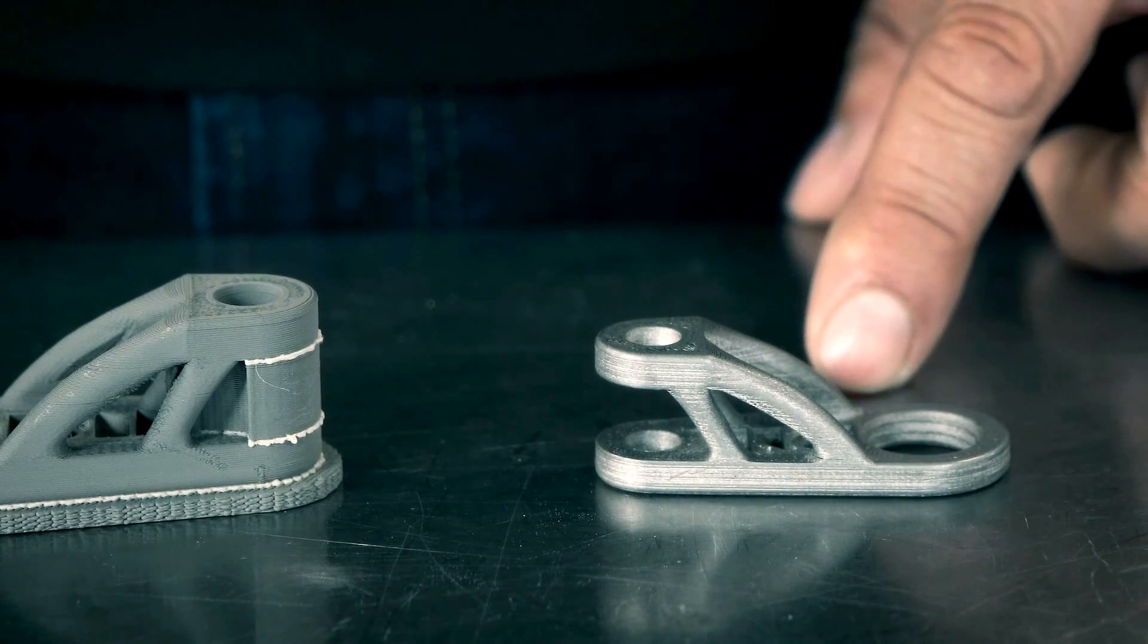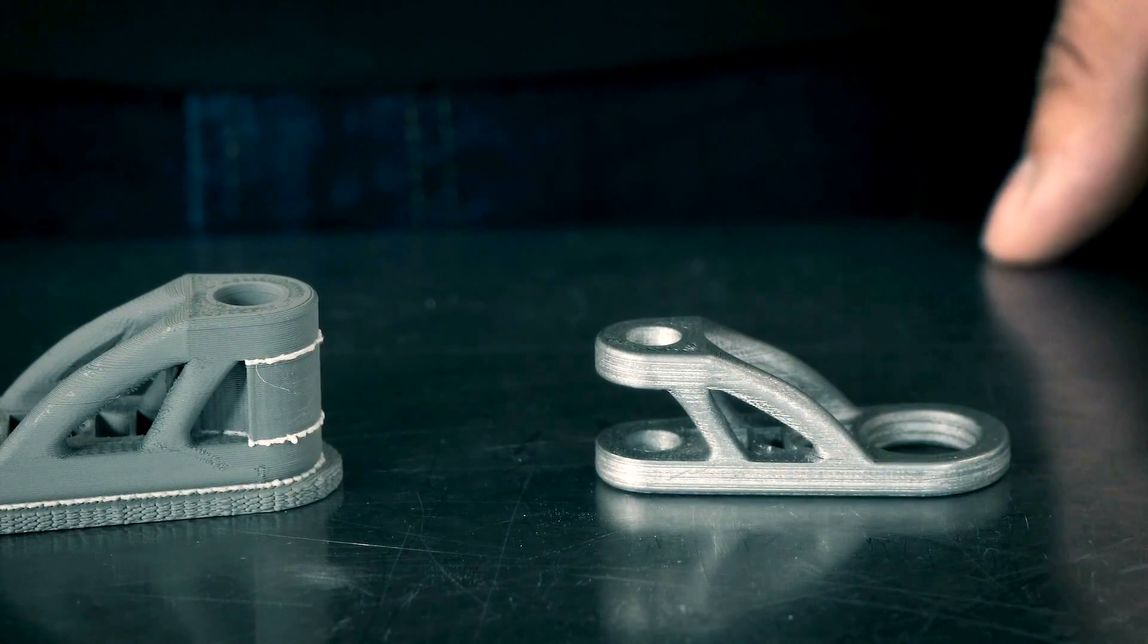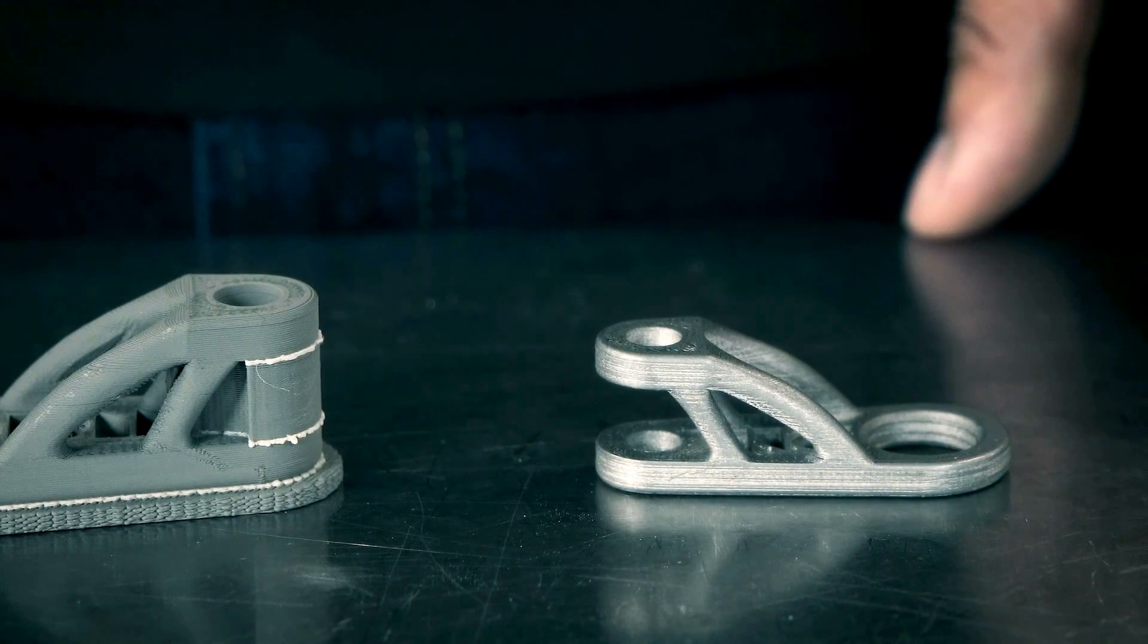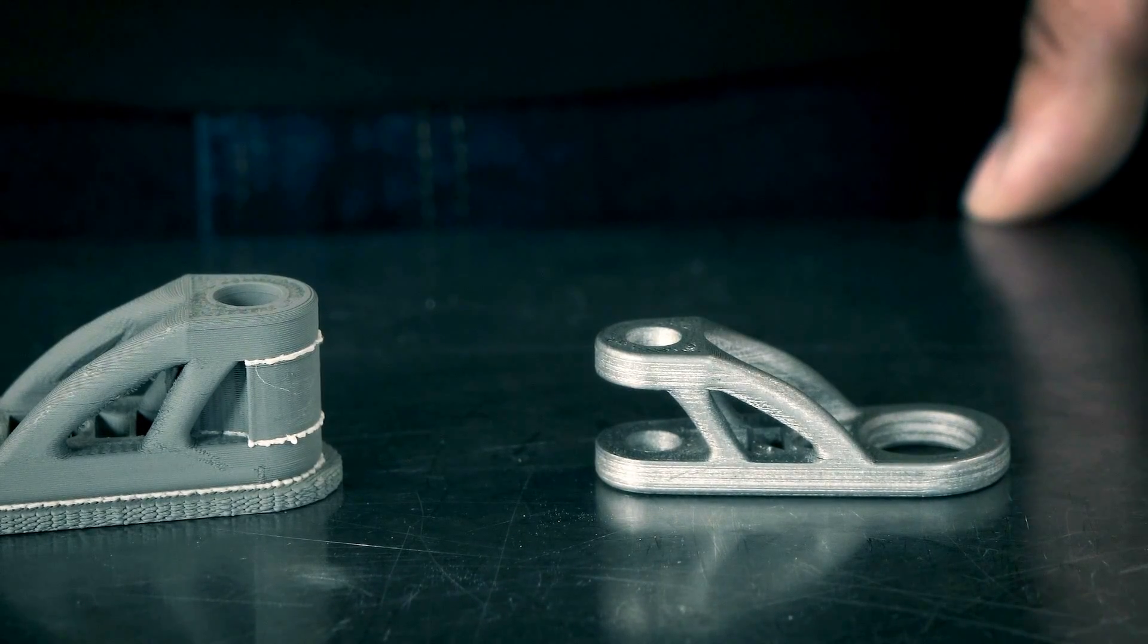Let's take a look at the finished part. As we can see it has a large gap here. If we were to print it without a support structure, this overhang would fall due to gravity.